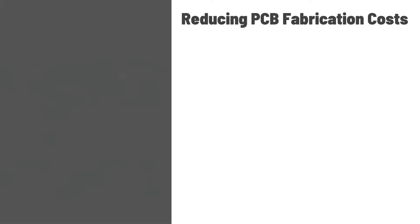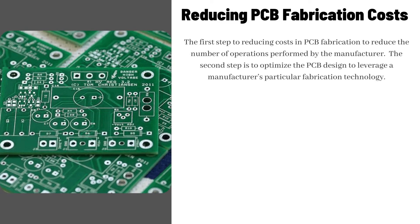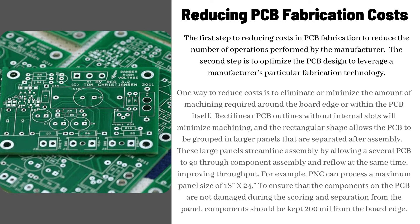Reducing PCB fabrication costs: the first step is to reduce the number of operations performed by the manufacturer. The second step is to optimize the PCB design to leverage a manufacturer's particular fabrication technology. One way to reduce costs is to eliminate or minimize the amount of machining required around the board edge or within the PCB itself. Rectilinear PCB outlines without internal slots will minimize machining, and the rectangular shape allows the PCB to be grouped in larger panels that are separated after assembly. These large panels streamline assembly by allowing several PCBs to go through component assembly and reflow at the same time, improving throughput.